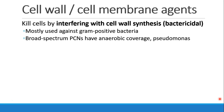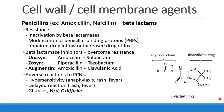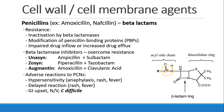For example, broad-spectrum penicillins — they have anaerobic coverage and pseudomonas as well. Looking at penicillins like amoxicillin or nafcillin, these are all beta-lactams. Here's a picture of a penicillin, and the beta-lactam ring is this structure right here. Depending on whether it's a penicillin or a cephalosporin, we'll see different rings and side chains attached to it.